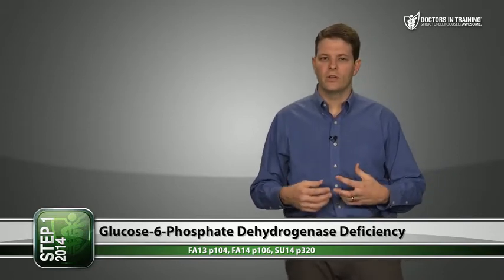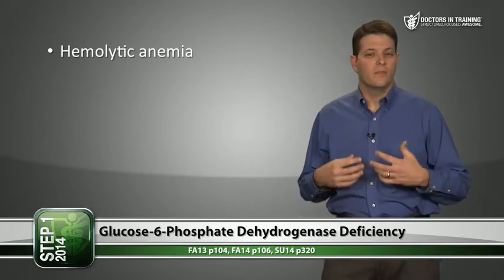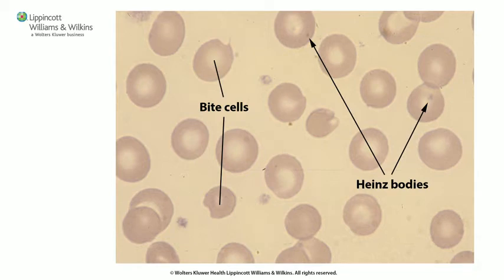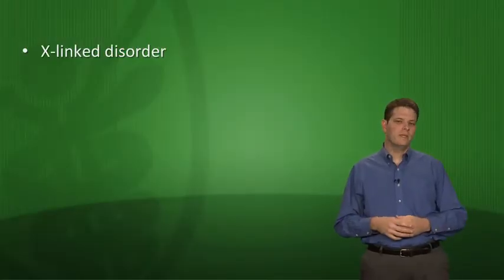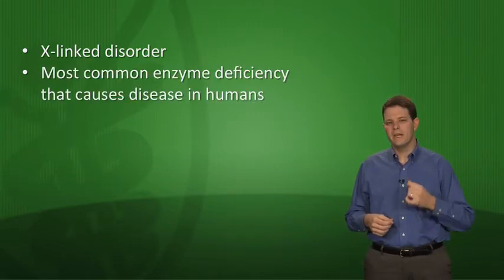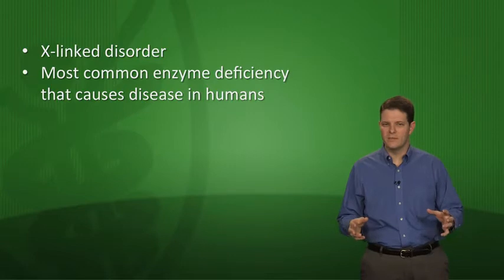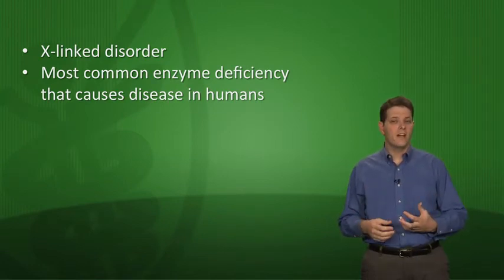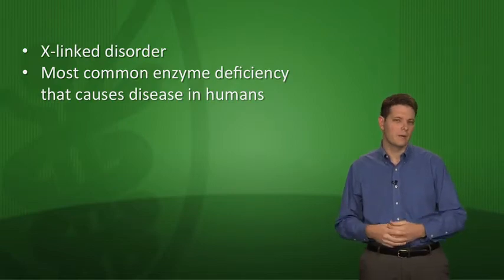On peripheral blood smear of a G6PD-deficient patient, you'll see Heinz bodies — clumps of oxidized, precipitated hemoglobin — and bite cells, which look like someone took a bite out of them. As these abnormal red cells pass through the spleen, macrophages remove the Heinz bodies, creating bite cells. G6PD deficiency is X-linked and is the most common enzyme deficiency causing disease in humans. It may also make red cells less susceptible to malaria.